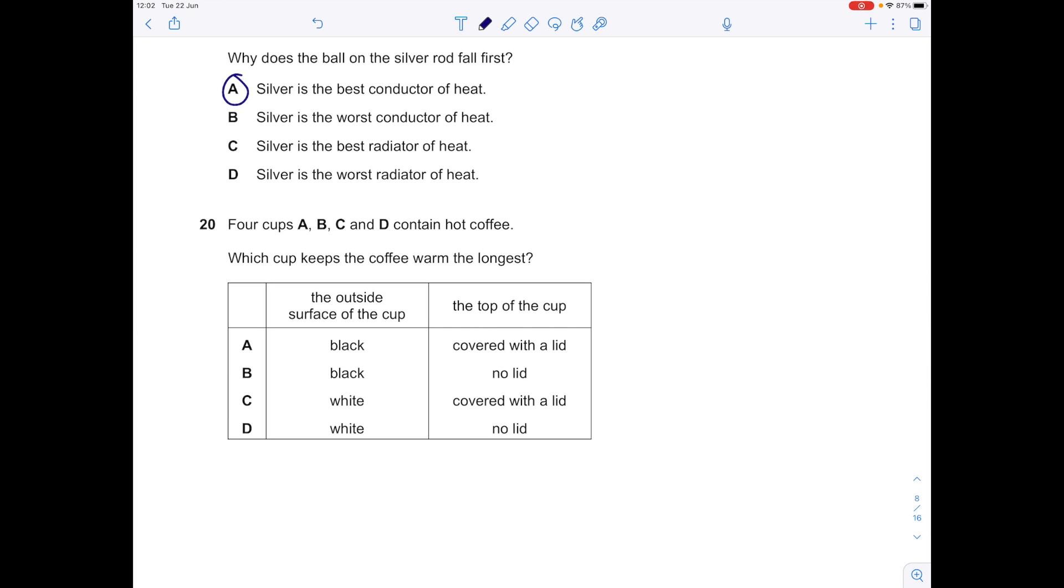Four cups A, B, C and D contain hot coffee. Which cup keeps the coffee warm the longest? First of all, picking whether the outside of the cup should be black or white. Just think about this from a common sense point of view: if you get a cup of coffee in a shop, the cups are white, they're never black. And why is that? Because white is a poor emitter of infrared radiation, which is something that you're after when you want to keep something warm. And then the top of the cup: should it be covered with a lid or no lid? So it needs a lid because there's that layer of air trapped between the lid and the coffee which acts as an insulator, and it also stops convection currents being set up when you have the lid. So therefore the answer here is C.